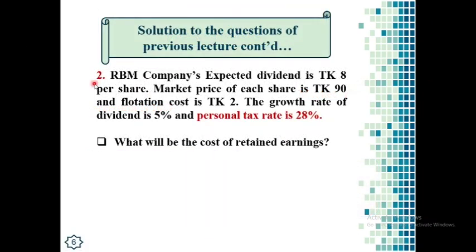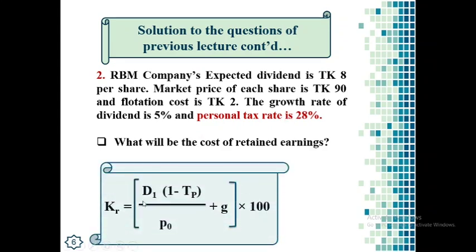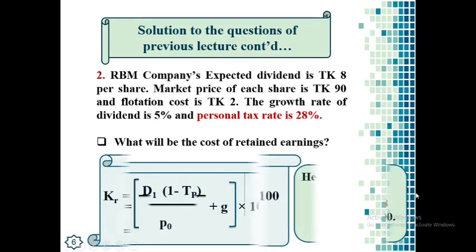The second question is: RBM Company's expected dividend is 8 taka per share, market price of each share is 90 taka, flotation cost is 2%, the growth rate of dividend is 5%, and personal tax rate is 28%. The question asks: what will be the cost of retained earnings of the company? As there is a personal tax rate in the question, we have to calculate the cost of retained earnings according to the appropriate formula.